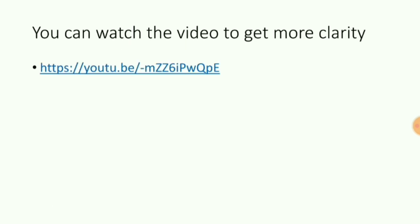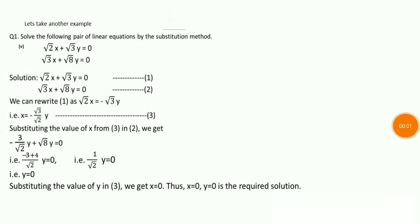If there is any doubt, you can watch this video later for more clarity. Let us take up another example. We will solve the following pair of equations by the substitution method — I am doing the fifth part of question number 1. The two equations given are: root 2x plus root 3y equal to 0 and root 3x plus root 8y equal to 0. From the first equation, I will find the value of x and substitute it in the second equation.